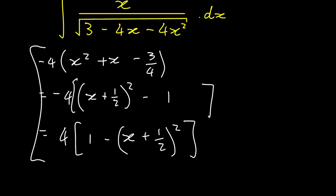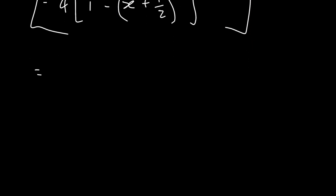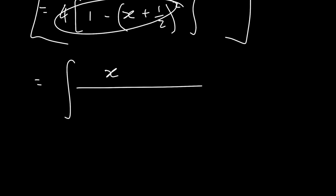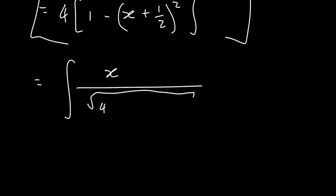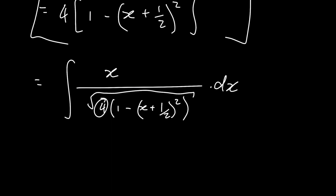Let's demarcate this as just working. Our integral is equal to x over all of this, which is square rooted — so it's 4 into 1 minus x plus 1 over 2 squared — and then dx. But this 4 is also the same as 2 to the power of 2, and so the square root of 4 is just 2. We can take that 4 out as a 2, and then because it's a constant, we can take it out of the integral as 1 over 2.